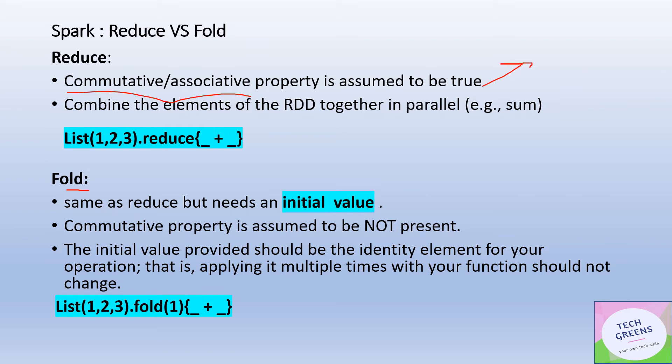So here, commutative property is not assumed to be present. And the initial value provided to the fold should be the identity element for your operation. That means applying that value multiple times with your function should not change.